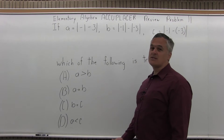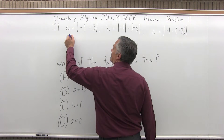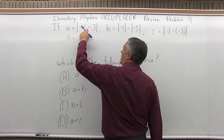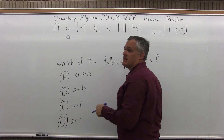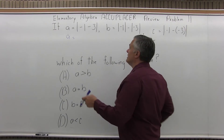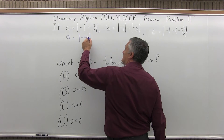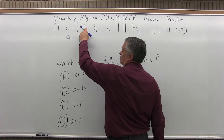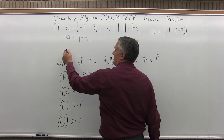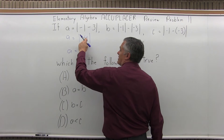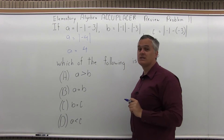To get started, we should figure out what A, B, and C are. A is the absolute value of negative 1 minus 3. The long vertical lines mean absolute value — keep the number the same but make sure the answer is positive. Negative 1 minus 3 is negative 4, so we have the absolute value of negative 4. Thinking of it in terms of temperature: 1 degree below zero goes down 3 more degrees, giving 4 degrees below zero. Keeping the number the same but making it positive, A equals positive 4.